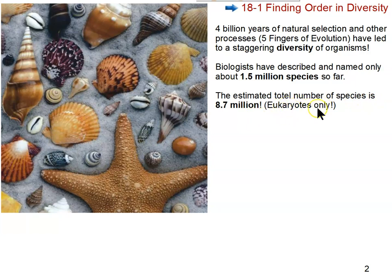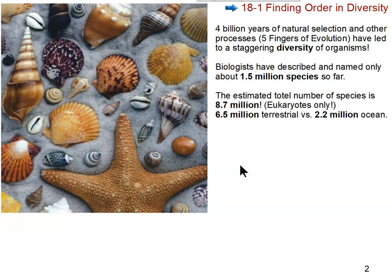It's estimated that the total number of eukaryotic species — completely ignoring prokaryotes — is about 8.7 million. Of those, about 6.5 million are terrestrial and about 2.2 million are in the oceans. The ocean is an aquatic habitat and tends to be more stable, whereas there are far more niches on land, so there are far more terrestrial species. The more niches there are, the more species there will be, because species evolve to fill available niches.